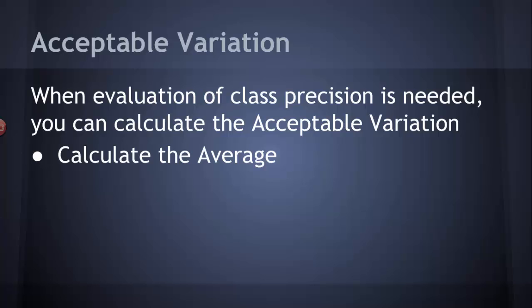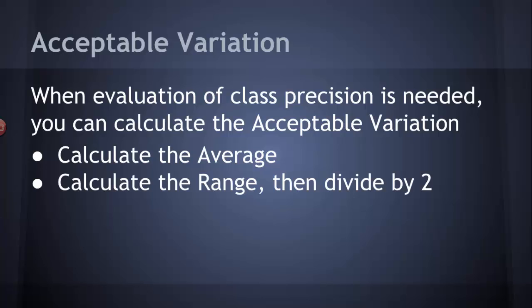Now, it's very simple. You're going to calculate the average of the class's set of data. You're also then going to calculate the range. The range is the total distance in numbers, the total numerical value between the smallest and the largest values. And you're going to divide that range by 2. And then you're going to report the average plus or minus the range divided by 2. And that's going to give you something called the acceptable variation to see how good the class was.